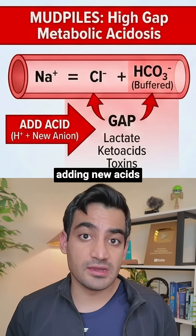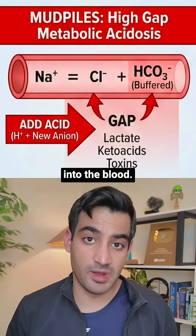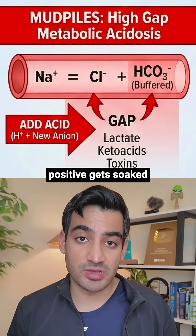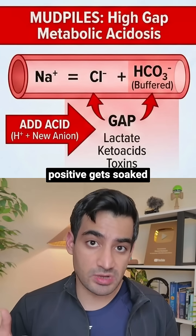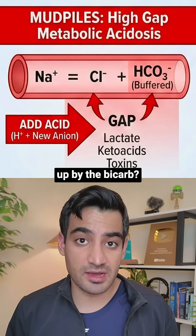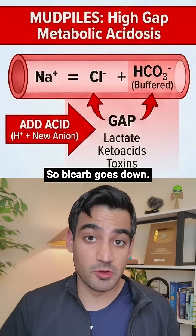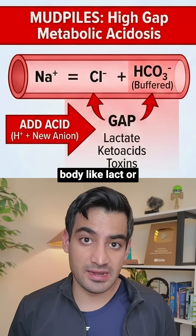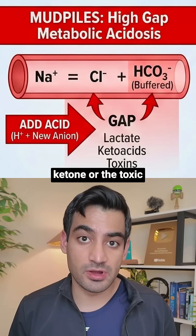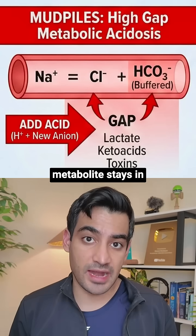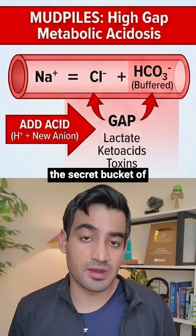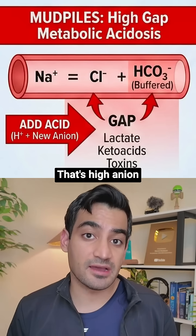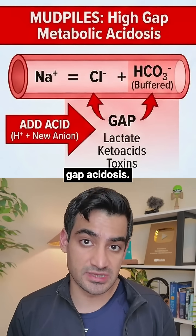In all of these, you're adding new acids into the blood. The H+ gets soaked up by the bicarb, so bicarb goes down, but the new negative body like lactate or ketone or the toxic metabolite stays in the secret bucket of unmeasured anions. That's high anion gap acidosis.